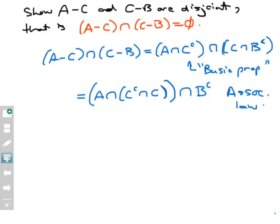Well, now what can I do? The reason I was doing this is because I saw C complement and C kind of together. Now that I really have them together, just think about what is C intersected with its complement. Well, that ought to be the empty set, and it is. So I can replace the innermost parenthesis here with the empty set.